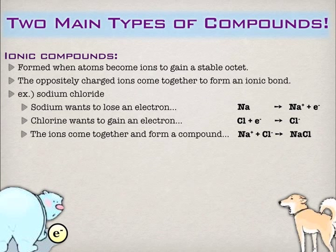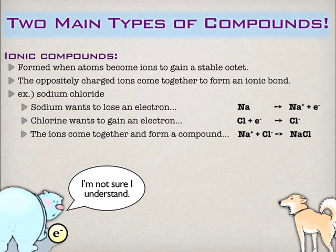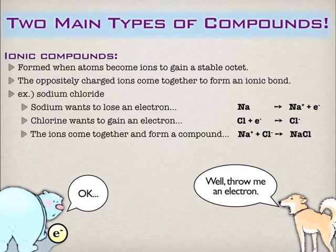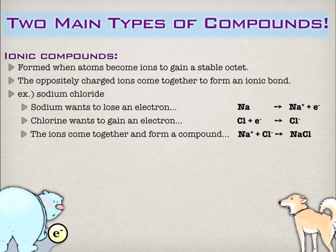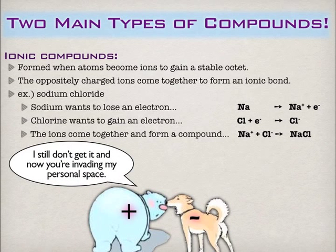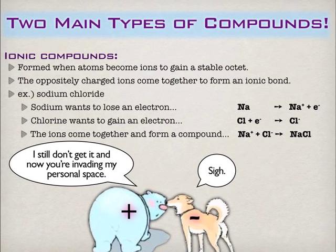That's really how it's formed. In ionic compounds we get something called crystal lattices, with a ratio of one to one in this case. Here Question Bear transfers his electron over to Answer Dog. Notice that Question Bear now has a positive charge because it lost an electron, and Answer Dog now has a negative charge because it gained an electron — and now they're attracted together. This is what an ionic bond is: simply these opposite charges coming together.